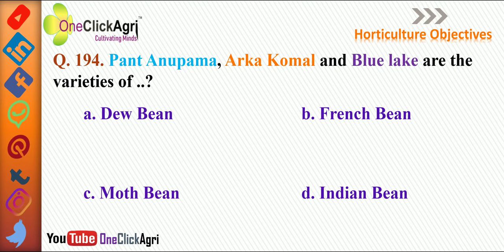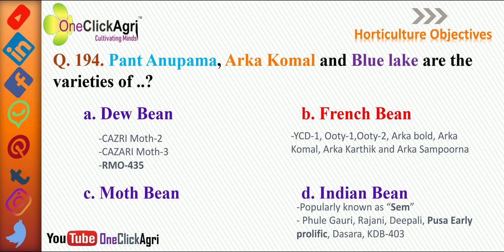Next question: Panta Anupama, Arka Komal and Blue Lake are the varieties of French bean. Additional varieties include YCD1, Uti1, Uti2, Arka Bold, Arka Komal, Arka Karthik and Arka Sampurna.